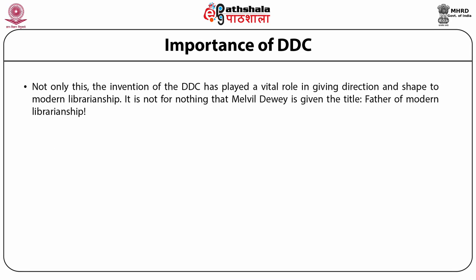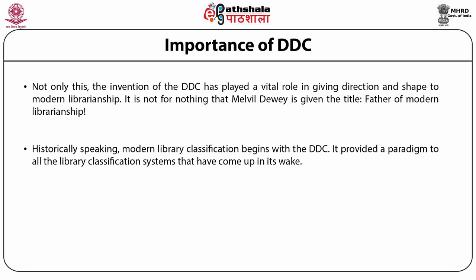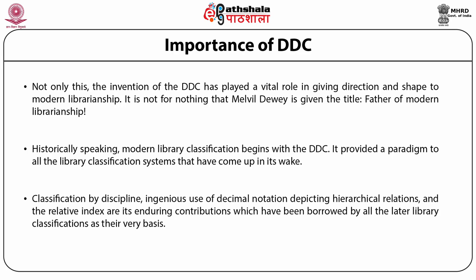The invention of Dewey Decimal Classification has played a vital role in giving shape to modern librarianship. It is not for nothing that Melville Dewey is given the title father of modern librarianship. Historically speaking, modern library classification begins with the publication of the DDC. It provided a paradigm to all the library classification systems that followed. Classification by discipline, ingenious use of decimal notation, depicting hierarchical relations and the relative index are its enduring contributions, which have been borrowed by all later library classifications as their very basis.